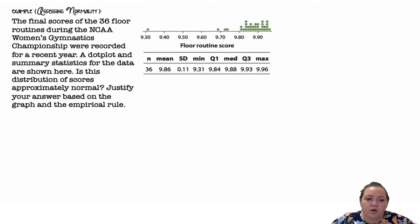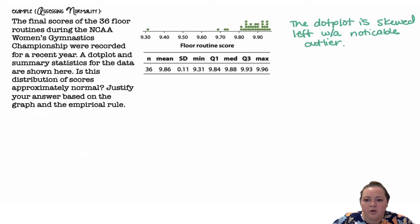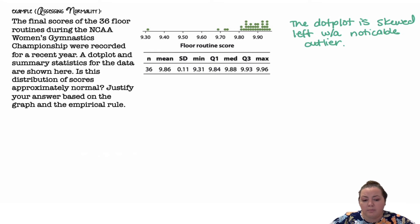The final scores of the 36 floor routines during the NCAA Women's Gymnastics Championship were recorded for a recent year. A dot plot and summary statistics for the data are shown. Is this distribution of scores approximately normal? Justify your answer based on the graph and the empirical rule. First of all, the dot plot is skewed to the left with a noticeable outlier, so I'm leaning towards probably not, but I'm going to check to see if approximately 68% of the data lies within one standard deviation.